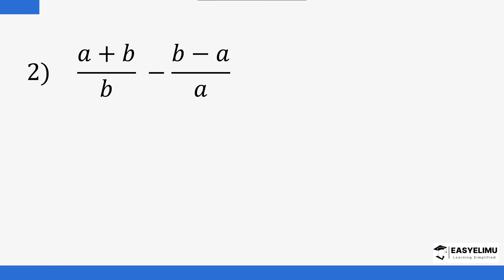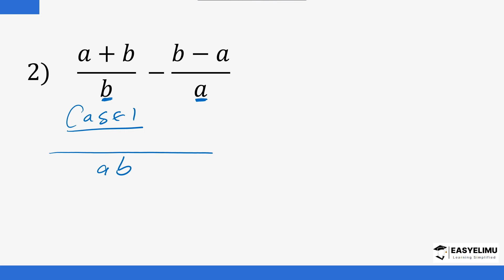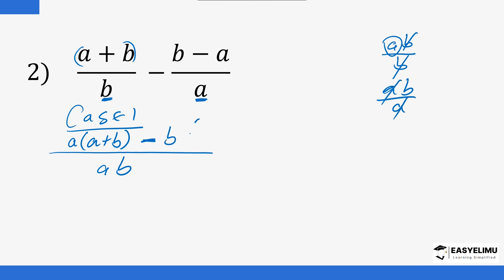Now let's look at the next expression using Case One — the LCM approach. These numbers are co-prime, so the LCM is just their product: a times b, so LCM = ab. We divide ab by b to get a, then multiply by the numerator (a + b); and ab divided by a gives b, which multiplies the numerator (b − a).